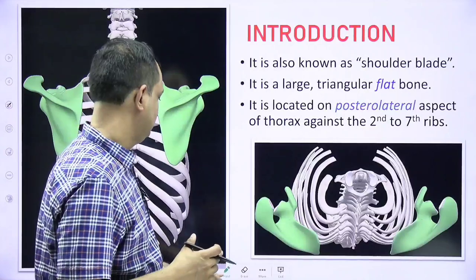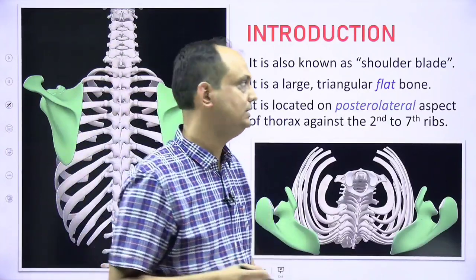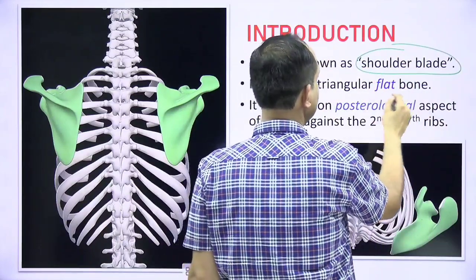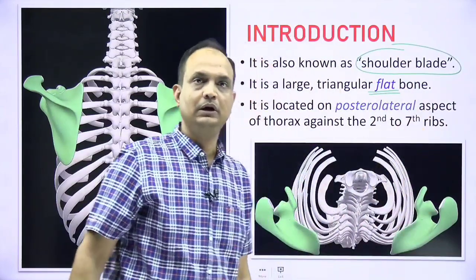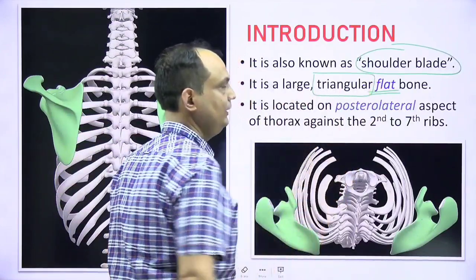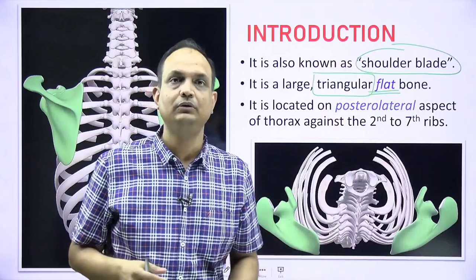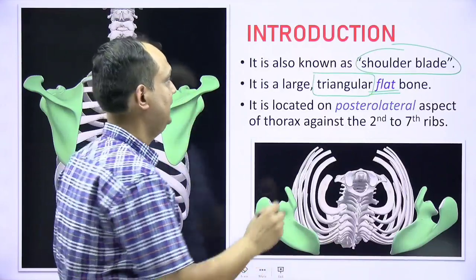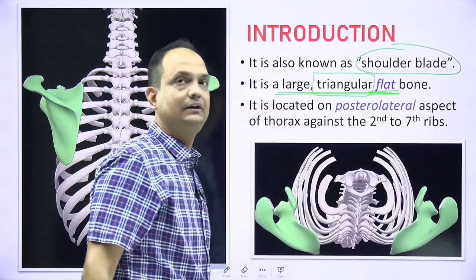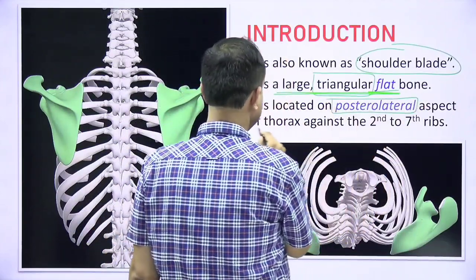Scapula is also known as shoulder blade. It is known as blade because it is a flat bone, and you can see the shape — it is triangular. So when you are dealing with the Scapula, you have to keep in mind that it is a triangular flat bone which is present on the posterolateral aspect of the thorax.